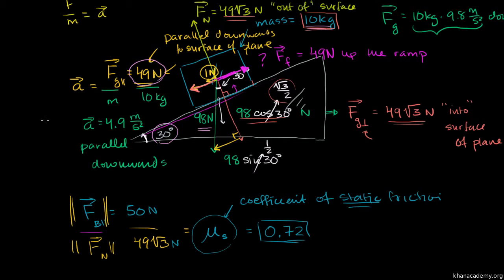I want to make a quick clarification to the last video, and then think about what friction is doing when the block is actually moving. In the last video, we started off with the block being stationary. We knew that the parallel component of the force of gravity on that block was 49 newtons down the slope. When the block was stationary, we said there must be an offsetting force — the force of friction — and it must be 49 newtons upwards, so they completely net out in that direction.